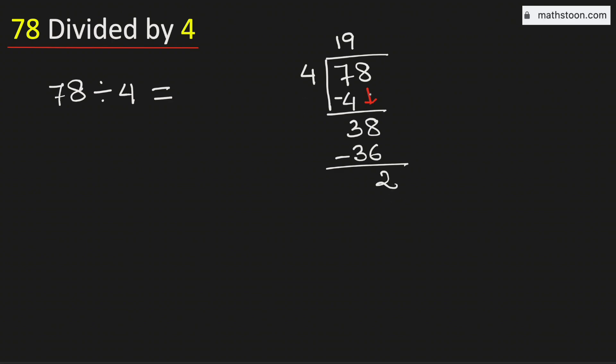Now 2 is less than 4, but we have no number to bring down here. That is why in this case we will put a decimal here so that we can borrow 1 zero.